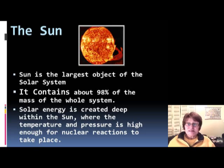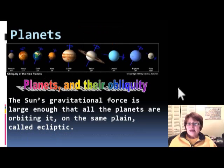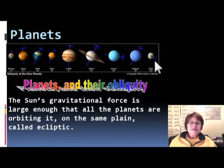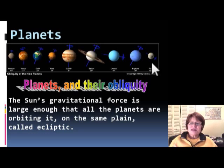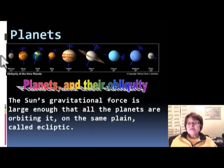We can already do nuclear fusion reactions, however it requires such high pressure and temperature that it's very expensive, so we cannot really do too much with it yet. The Sun is surrounded by planets — I have a picture here showing all nine of them. Pluto is not considered a planet right now, but I love that picture. The Sun's gravitational force is large enough to keep all the planets orbiting it.